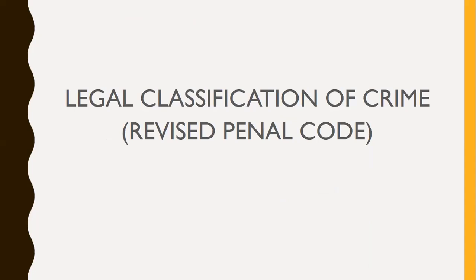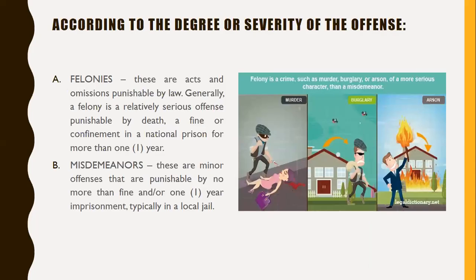Under the Revised Penal Code, crimes are classified according to degree or severity. Felonies are acts and omissions punishable by law — generally, a felony is a relatively serious offense punishable by death, a fine, or confinement in a national prison for more than one year. Misdemeanors are minor offenses punishable by no more than a fine and/or one year imprisonment, typically in a local jail.